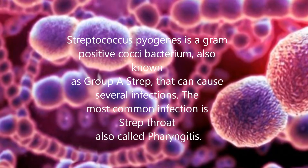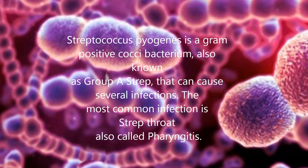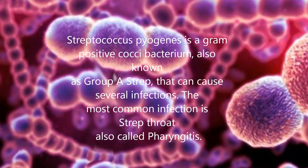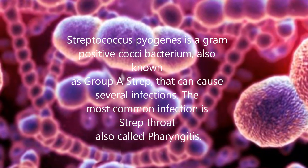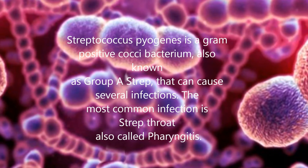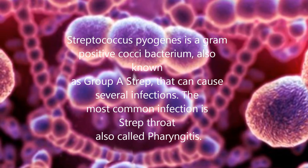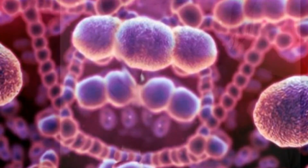Streptococcus pyogenes is a gram-positive coccus bacterium, also known as Group A Strep, that can cause several infections. The most common infection is strep throat, also called pharyngitis.